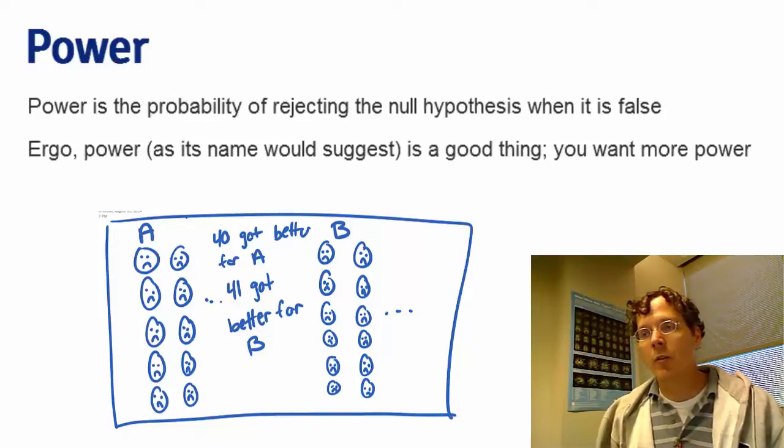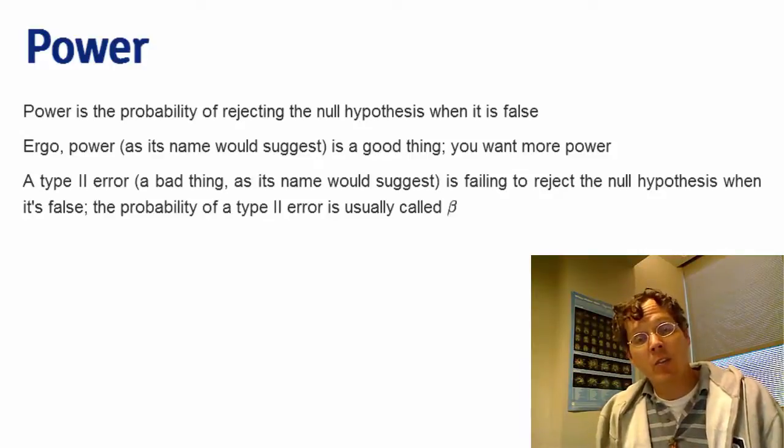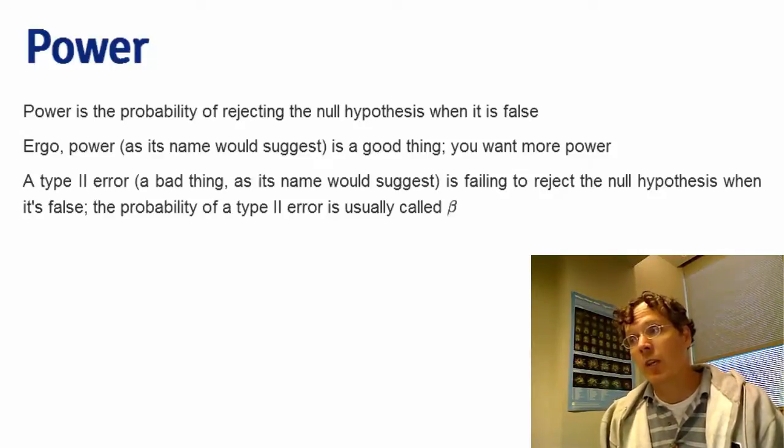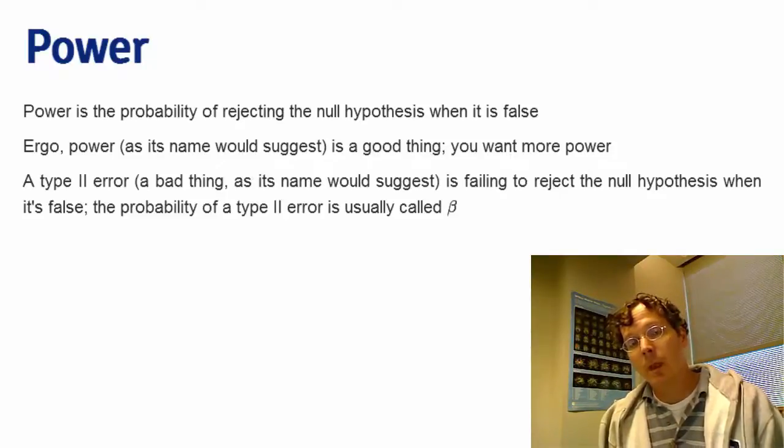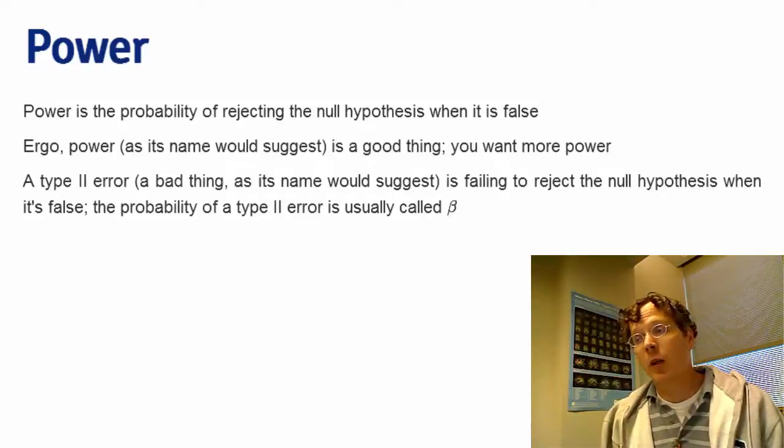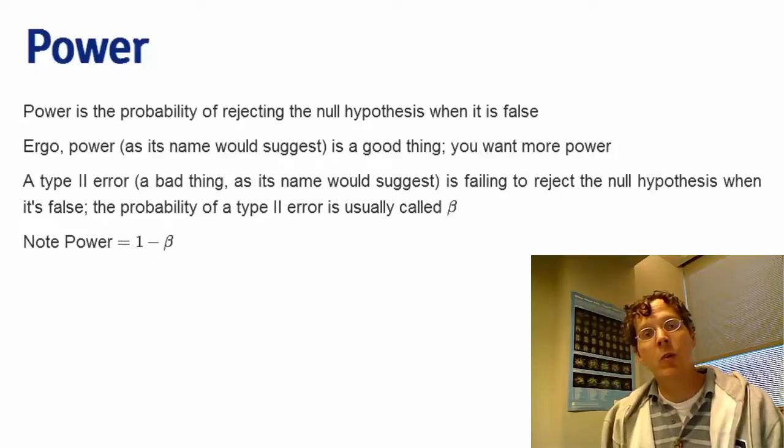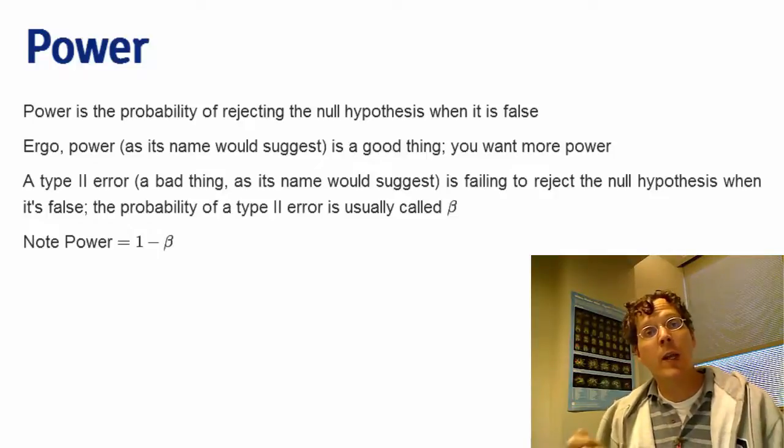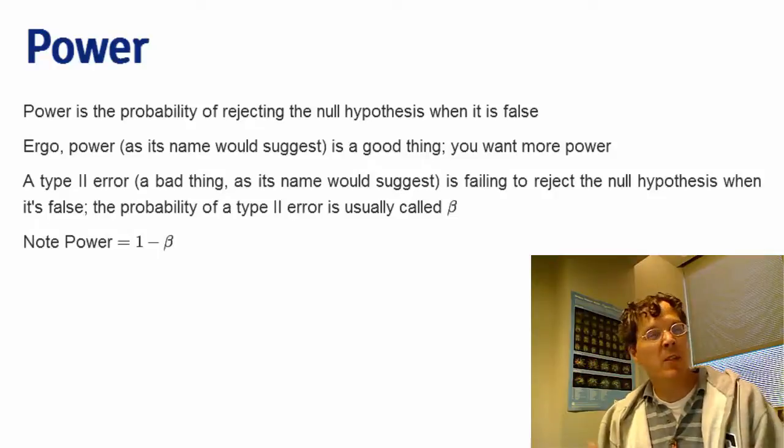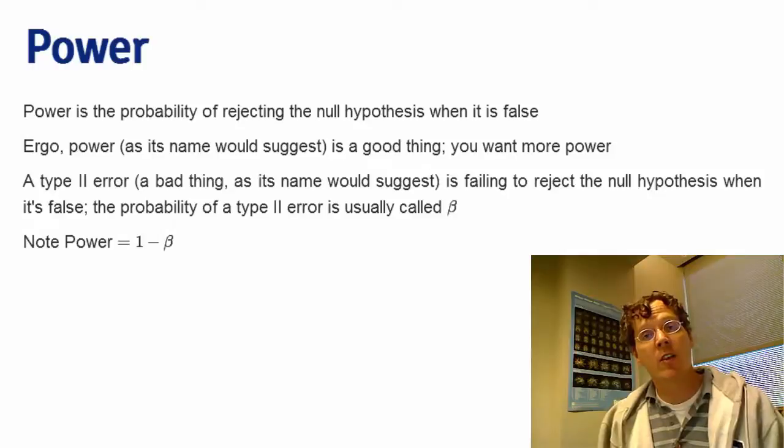So, let's also cover a couple more details. A type 2 error, as its name would suggest, is failing to reject the null hypothesis when in fact the null hypothesis is false. So, the probability of a type 2 error is usually called beta and power is just 1 minus beta. So, the two most meaningful quantities for hypothesis testing in terms of the two error rates are alpha, the type 1 error rate, and beta, the type 2 error rate. But we tend not to talk so much about beta, instead we tend to talk about 1 minus beta, this concept of power.